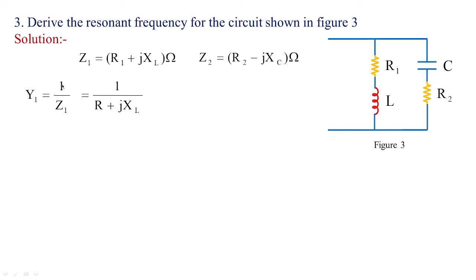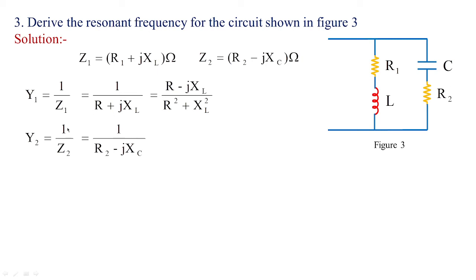We have Z1 = R1 + jXL ohms and Z2 = R2 − jXC ohms. The admittance values are Y1 = 1/Z1. Taking the reciprocal and multiplying and dividing by R minus jXL on numerator and denominator, we get R minus jXL divided by R² plus XL². Similarly, Y2 = 1/Z2 = 1/(R2 − jXC), which gives R plus jXC divided by R² plus XC².